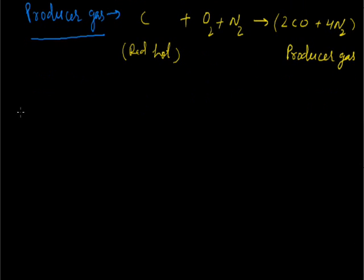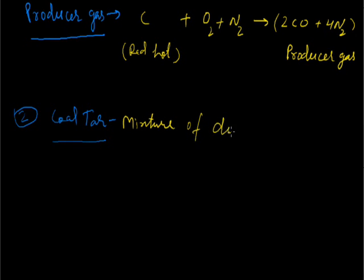Another product is coal tar. It is a mixture of different carbon compounds. If we see its physical appearance, it is thick, viscous in nature, and a black colored liquid.